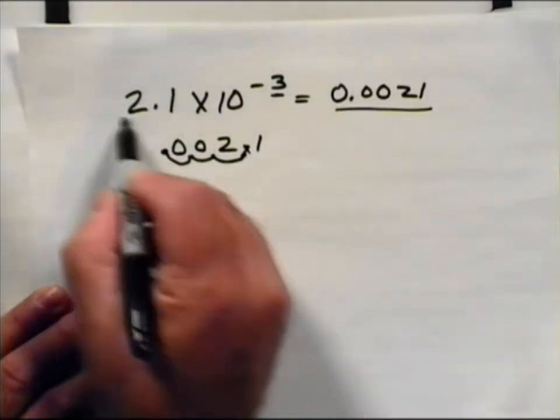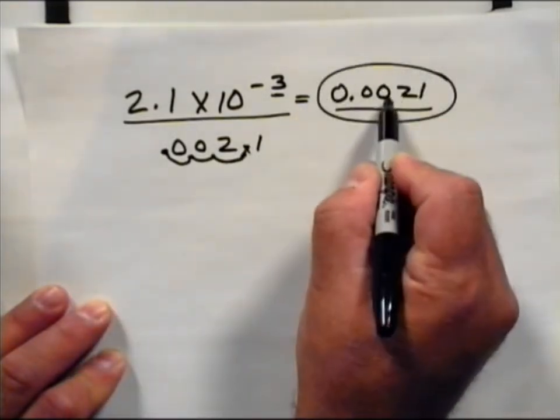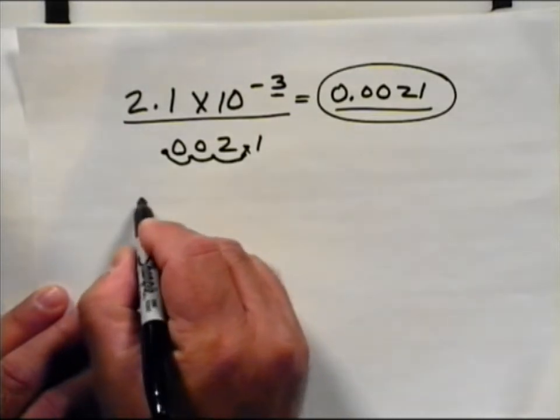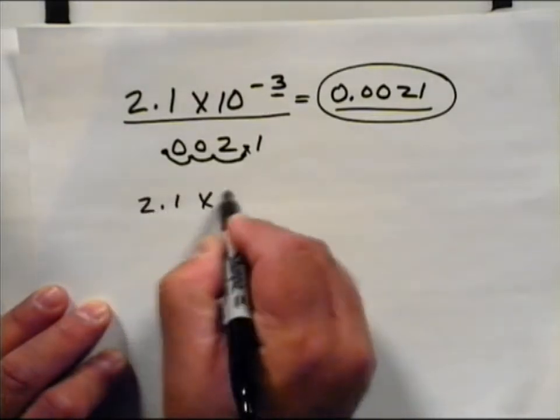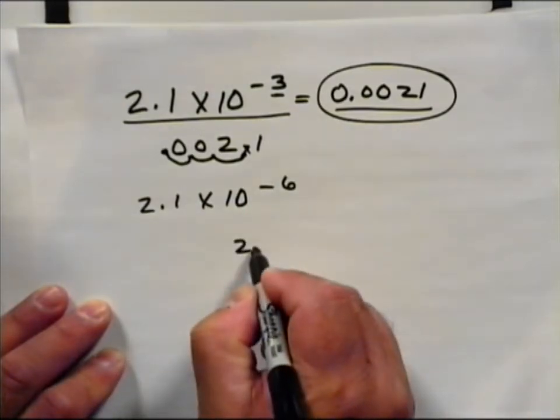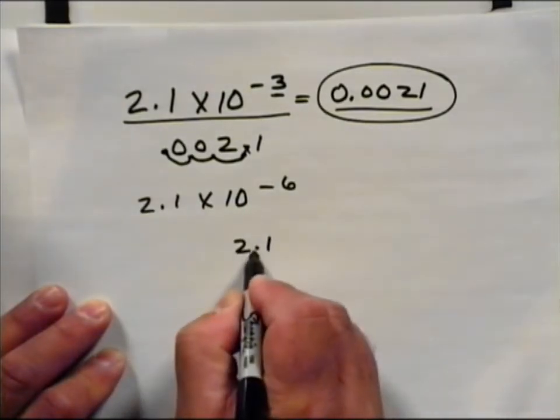So we have simplified how many places we had by writing this number in scientific notation. Similarly, if I had 2.1 times 10 to the minus 6, I could do the same thing. 2.1 and go 6 places.